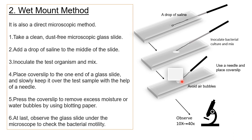Place a cover slip to one end of the glass slide and slowly lower it over your test sample with the help of a needle. Touch one edge of the cover slip to the slide where the bacterial suspension is and slowly place it — this helps to avoid air bubbles. Gently press the cover slip to remove excess moisture, use blotting paper to remove excess water, and then observe the slide under the microscope to check bacterial motility. Again, adjust at 10x and then change the objective to 40x.